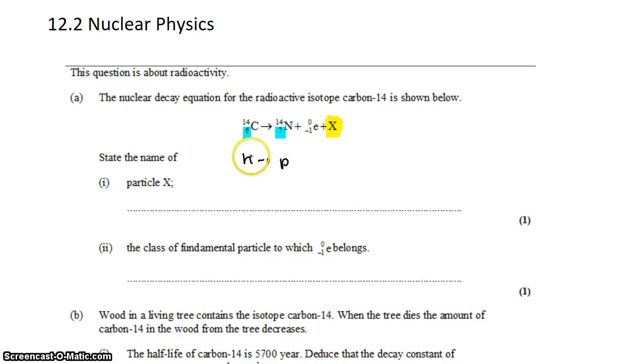Now, in order to conserve charge, we have positive charge on this side and neutral charge on this side. So we have to add an electron in to conserve charge. Negative and positive become neutral.